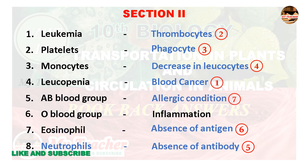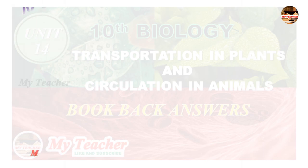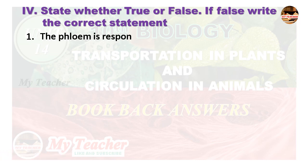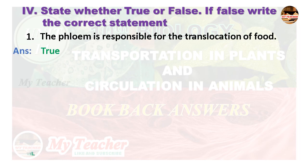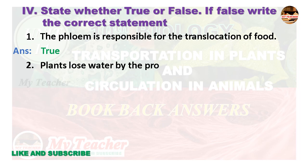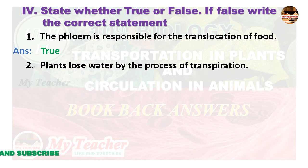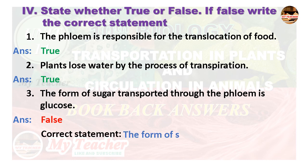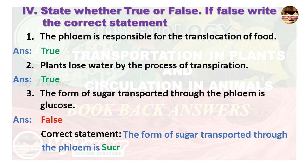State whether true or false. First: The phloem is responsible for the translocation of foods — True. Second: Plants lose water by the process of transpiration — True. Third: The form of sugar transported through the phloem is glucose — False. Correct statement: The form of sugar transported through the phloem is sucrose.